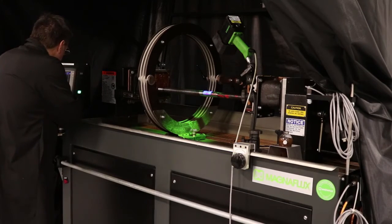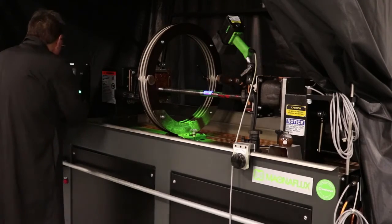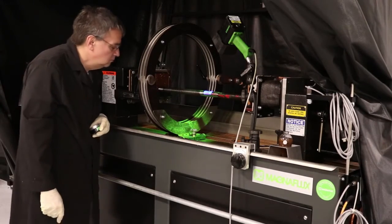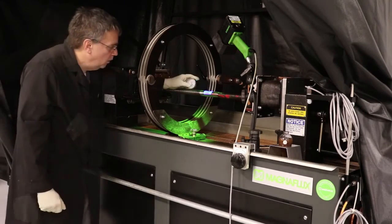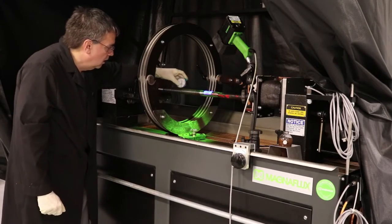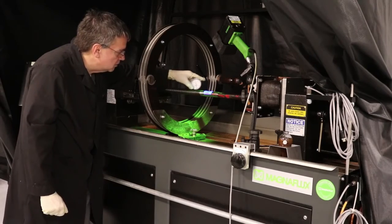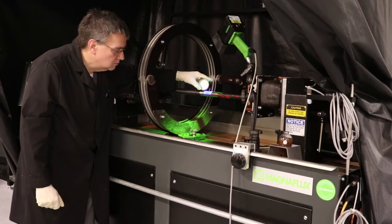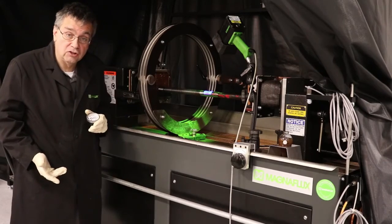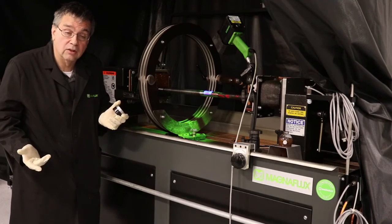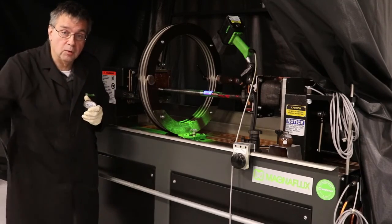So now after I run the demagnetization cycle, we can check and the part is now demagnetized. Once the part is demagnetized to your specifications, the normal specification is less than plus or minus three gauss, you may then take the part on to continue processing it.